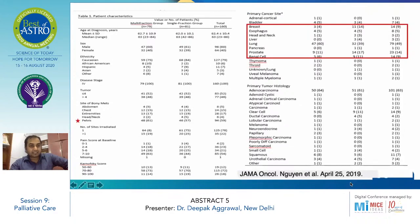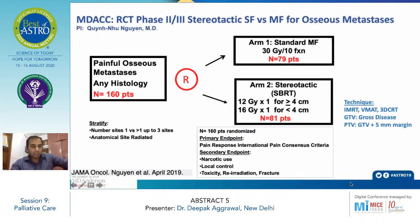Looking at patient characteristics, the primary tumor sites recruited were breast, oesophageal, head and neck, liver, lung, multiple sites, pancreas, prostate, and squamous cell carcinoma. In total, 160 patients: 79 in the 30 Gy/10 fraction arm. In the SBRT arm, 81 patients were stratified by dose — 12 Gy single fraction for lesions greater than 4 cm, and 16 Gy in 1 fraction for lesions less than 4 cm. The PTV was GTV plus 5 mm margin.